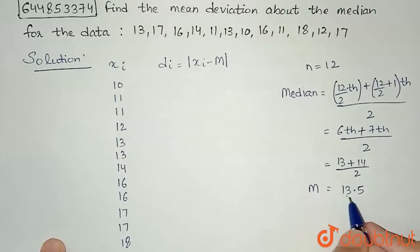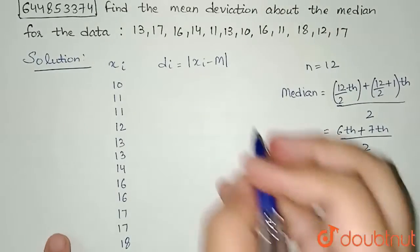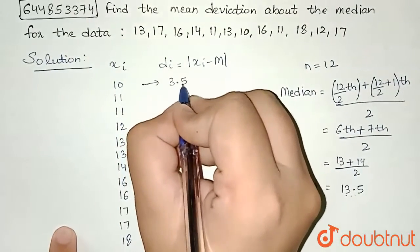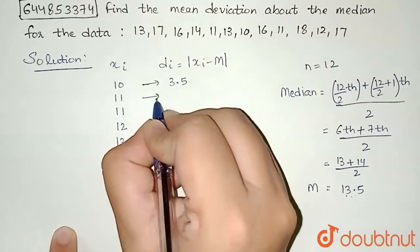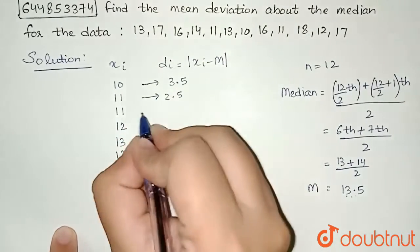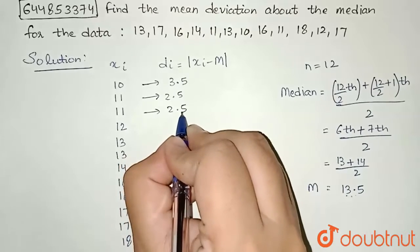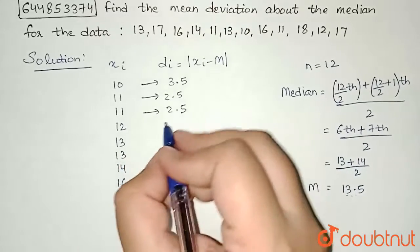See, 10 minus 13.5 will be minus 3.5, and mod will be just 3.5. So for this it is 3.5. Similarly for 11, I will have 2.5. Now same 11, so again 2.5.